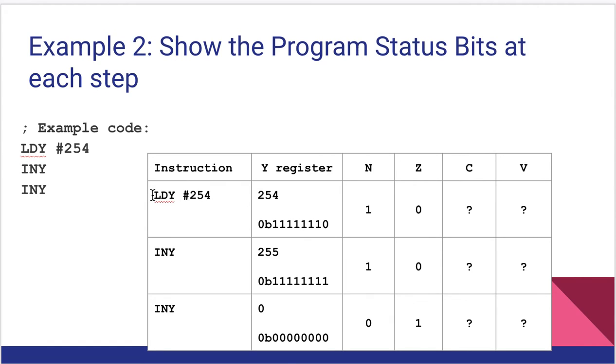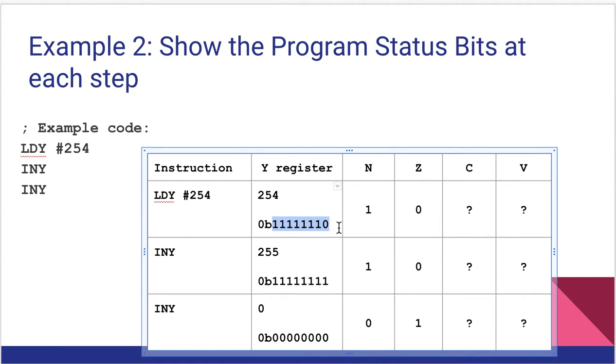So I load 254 into Y, so now the Y register contains 254. And here is the binary for convenience. Notice the leftmost bit is a 1, meaning this can be interpreted as a negative result if we interpret it as a signed value. Even though we're looking at it here as unsigned, if we interpret that same bit pattern as signed, it's negative. So the N flag does get set to 1 because it's always going to mirror that leftmost bit. Now we have some 1s in our results, so the Z flag does not get set.